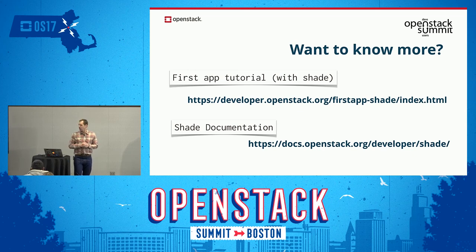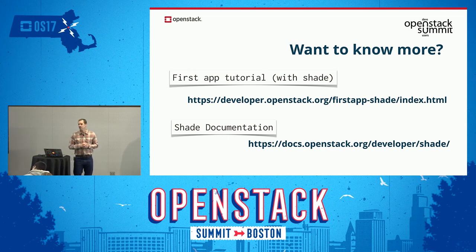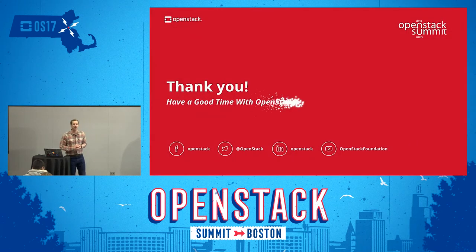The original steps were taken from a first-app tutorial available within the OpenStack documentation site. Head over to developer.openstack.org/firstapp-shade to follow along and write your own first application — the directions there are much more extensive and actually have you building a working multi-instance distributed computation application. You can also see the Shade documentation at docs.openstack.org/developer/shade to find out about all the features available and the assumptions Shade makes.